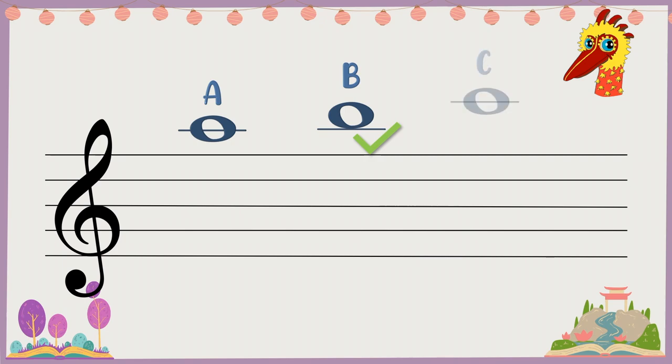This is wrong. To get C, you need two ledger lines. Got it? Got it!